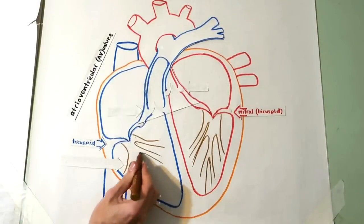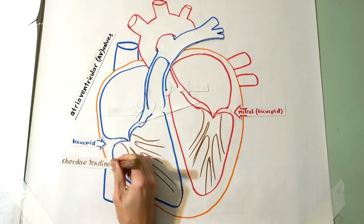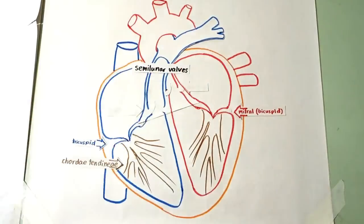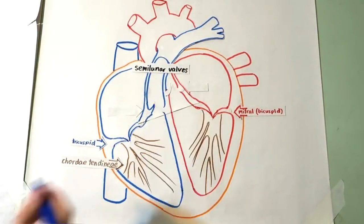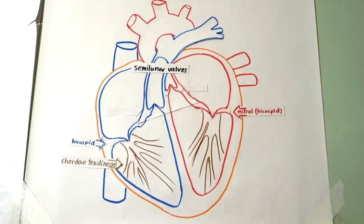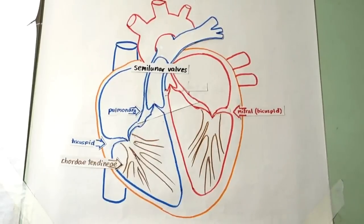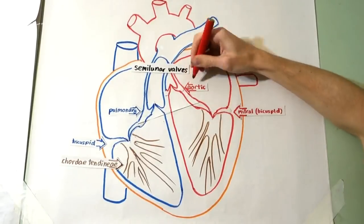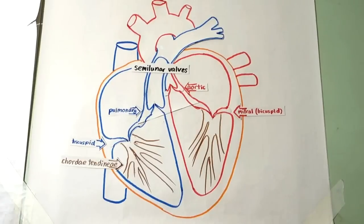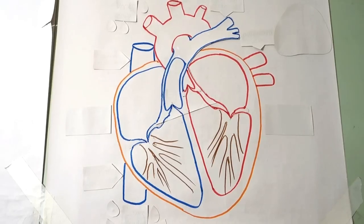The other type of valves are the semilunar valves, which allow the passage of blood from the ventricles to the arteries that carry the blood away from the heart. The semilunar valve on the right side of the heart is the pulmonary valve, and the one on the left side is called the aortic valve. They are smaller than the AV valves and do not have chordae tendinae to hold them in place.